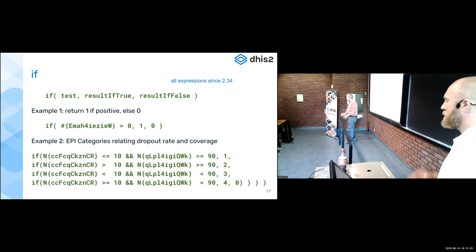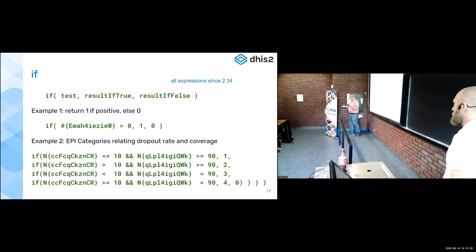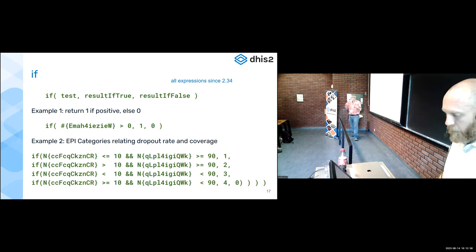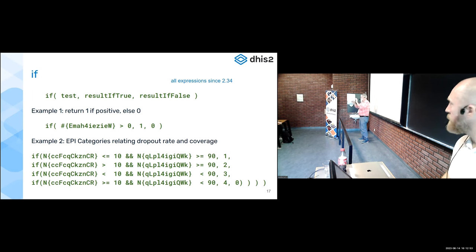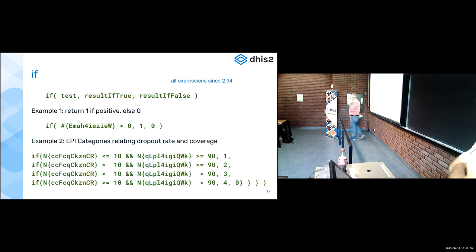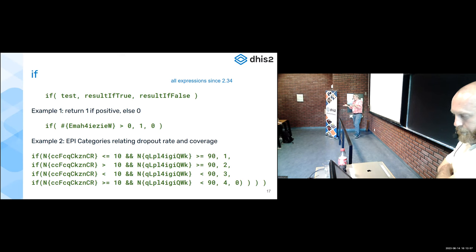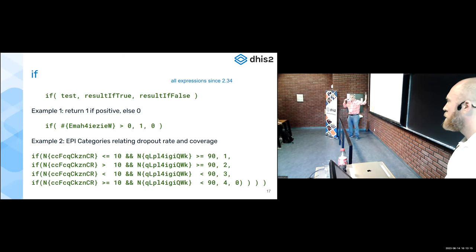Someone did write that Jira ticket, it got approved, and in the next release there will be a case statement. Users are really important to the process — we don't do geeky things just because we think it's cool, we do things because people say they have a need. And when writing a Jira ticket, please tell us what it's for and why, not just what you want. That helps us understand the meaning and prioritize it.